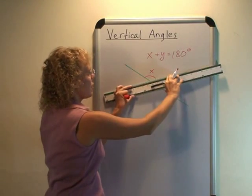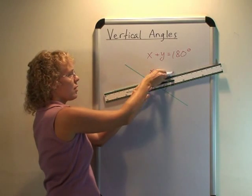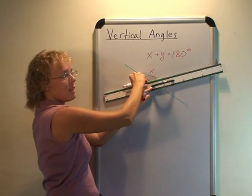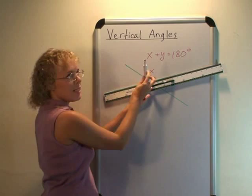And then similarly, if I put my ruler right like this and consider this straight angle here, there's 180 degrees. If this is x, this must be y.